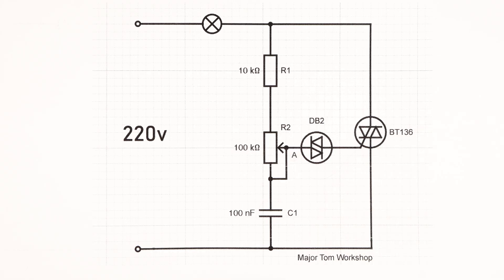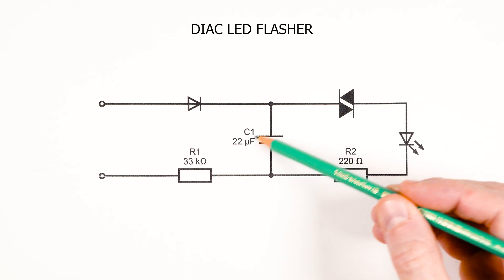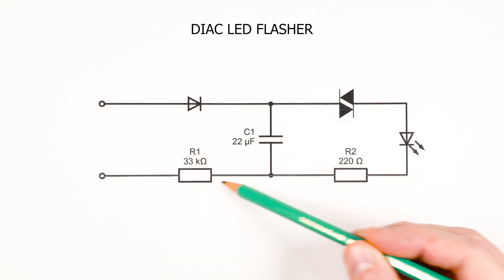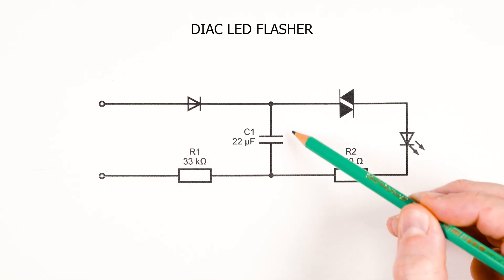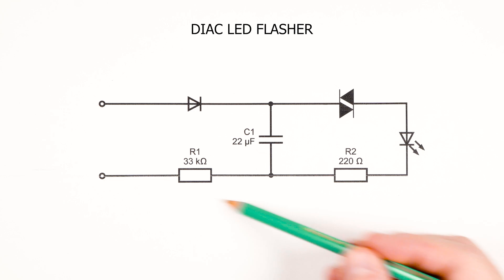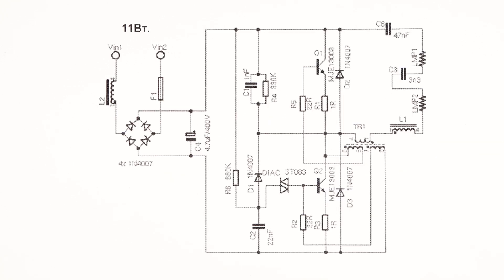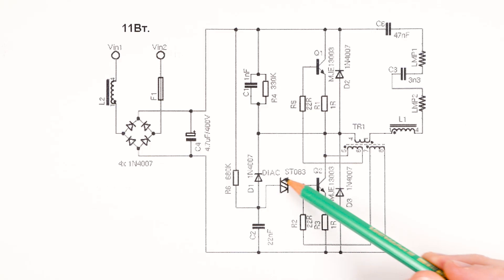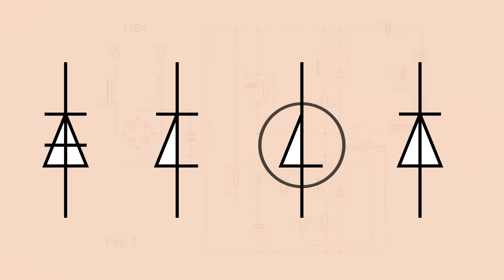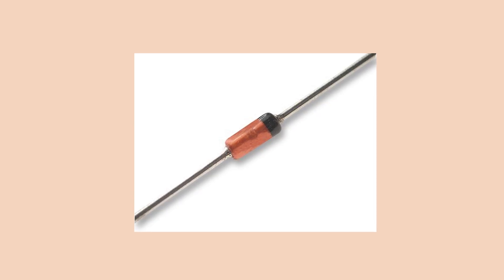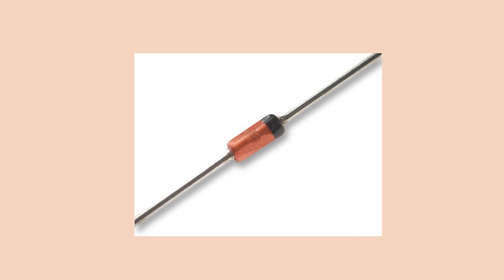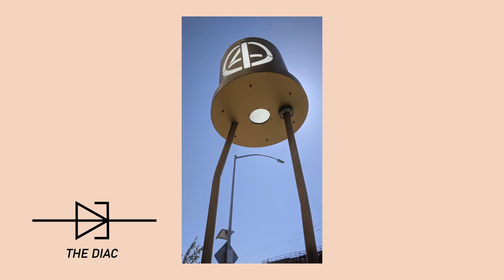A simple LED flasher can also be made from a DIAC: C charges through R and D1 until above 32 volts, the DIAC fires, C dumps through the LED, LED flashes, voltage drops, DIAC turns off, and the cycle repeats. In CFL lamps, DIACs are also used as oscillation starters — here ST-083 plays that role. Fun fact: there is no single standard schematic symbol for the DIAC; sometimes it even resembles the number 4, for the four semiconductor layers. In the 1950s, the DIAC was among the first silicon devices, because other semiconductors back then were germanium. Because of its historical significance, it even has a monument in California.